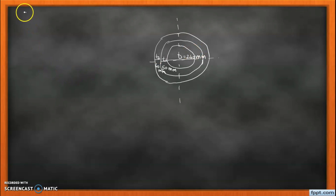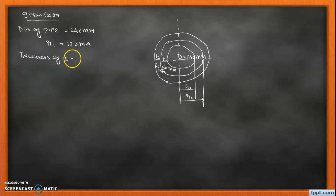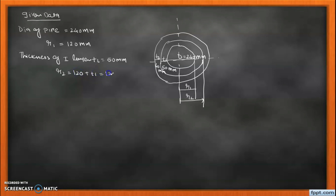Writing down the given data: the diameter of the pipe is 240 millimeters, which means radius r1 is 120 millimeters. The thickness of the first insulation layer t1 is 50 millimeters, so r2 = r1 + t1 = 120 + 50 = 170 millimeters.